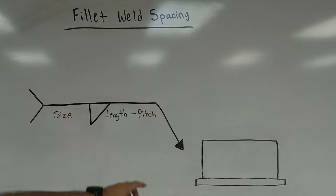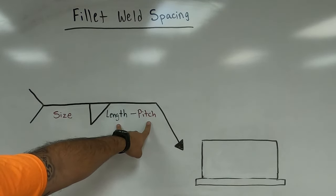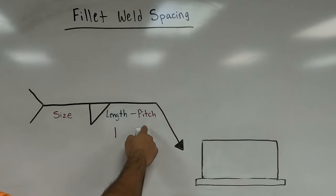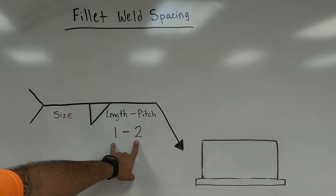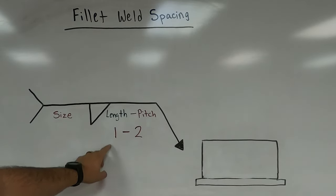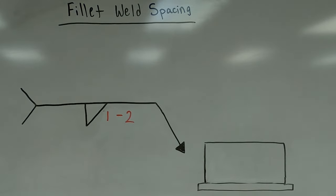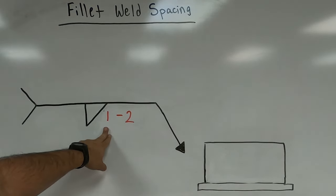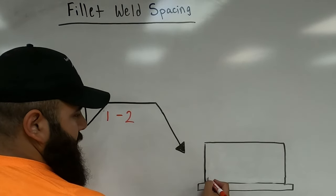Length and pitch always appear together on the right-hand side, separated by a hyphen. For example, you might see '1-2': the first number is the length, the second is the pitch — the spacing between welds. In this example, with a length of one and a pitch of two, the length of our weld is one inch. When welding the T-joint, the first weld will be one inch long.